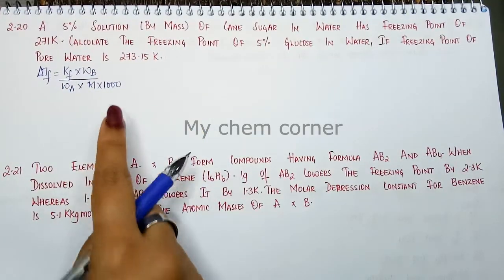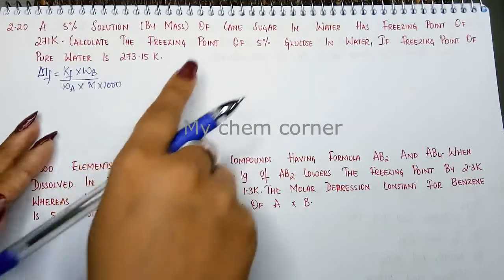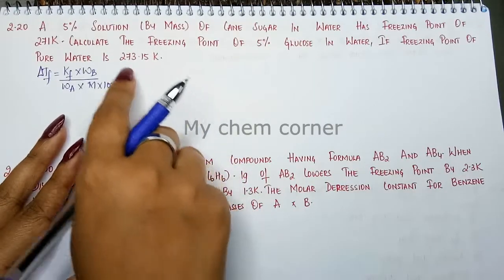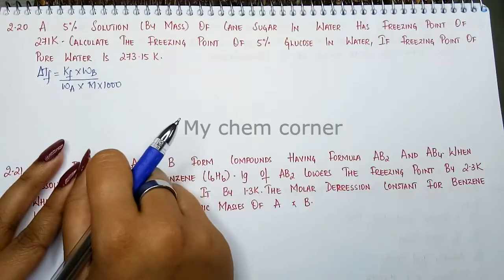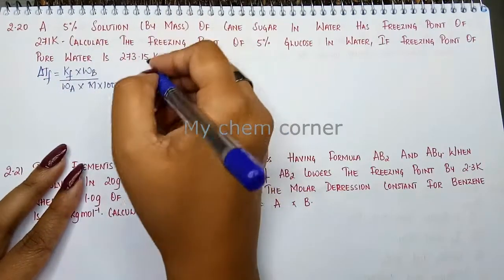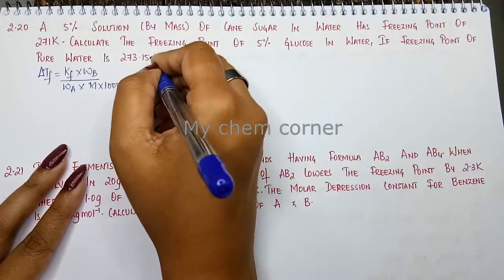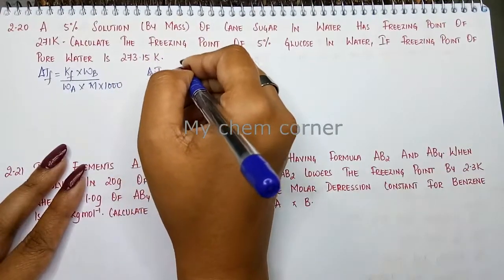Now we have to check what all values are given to us in this case. There are two freezing points given to us, so we can write that Tf is going to be 271 Kelvin and Tf0 is going to be 273.15 Kelvin.